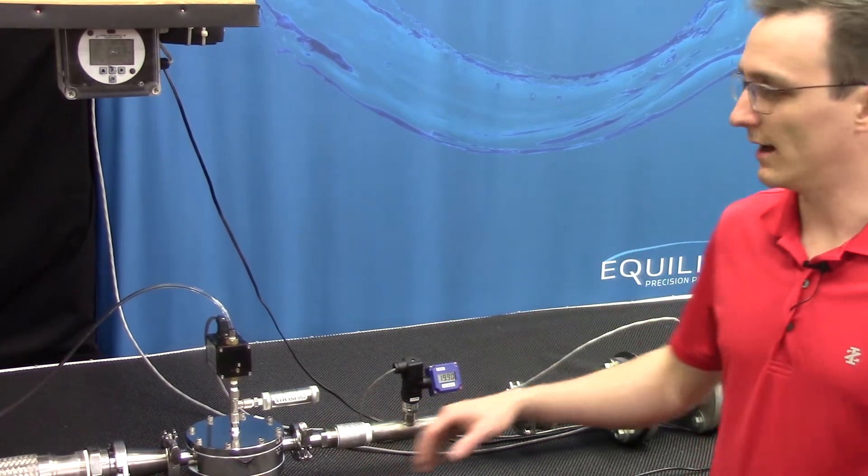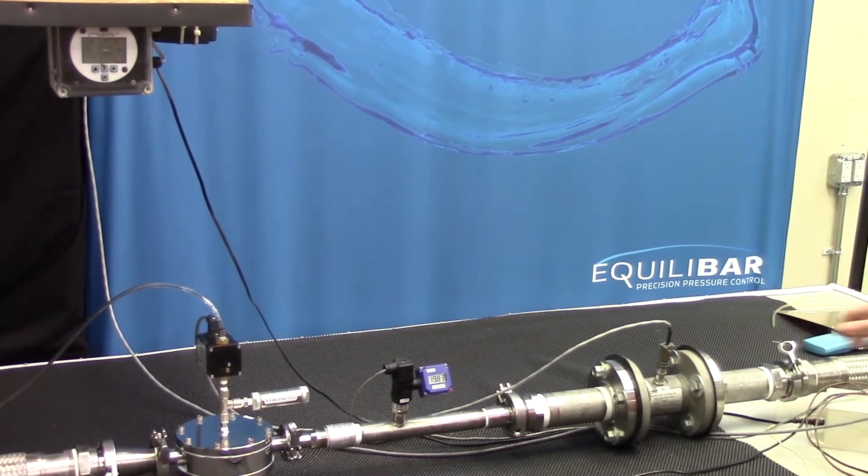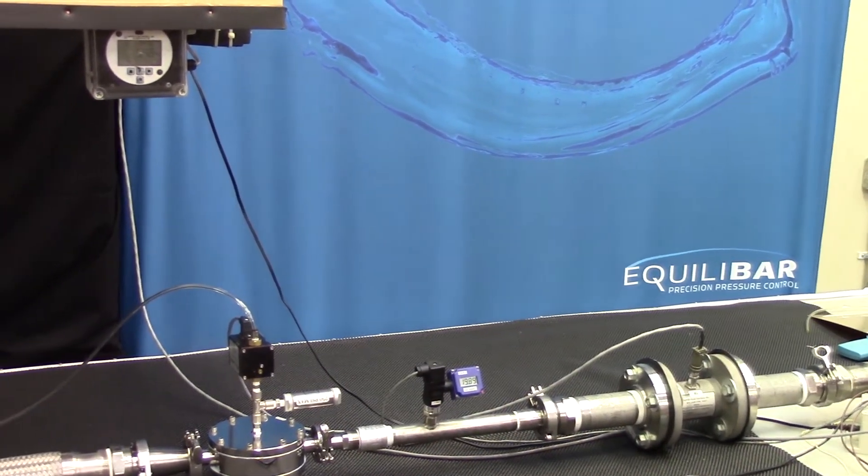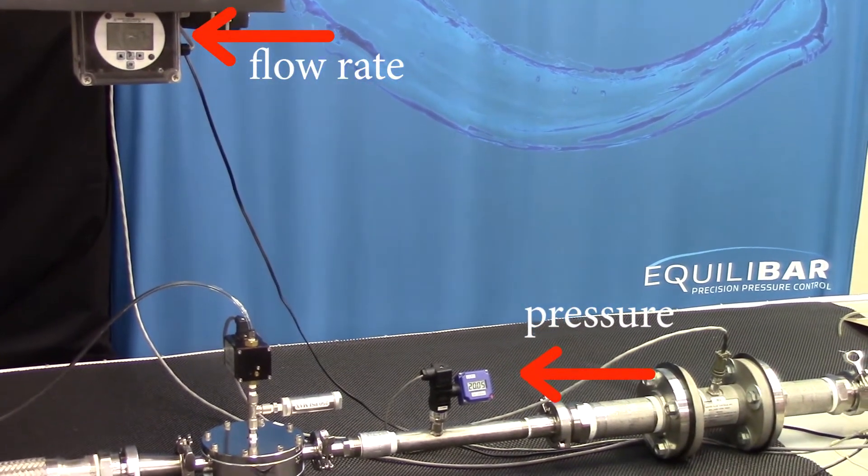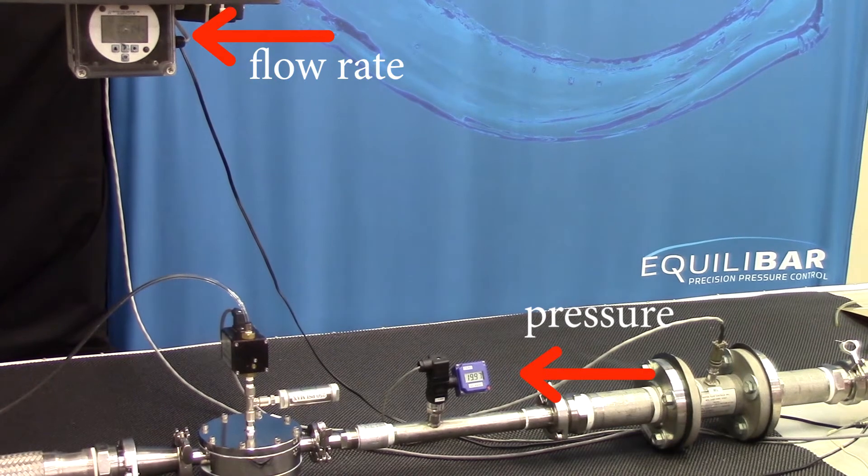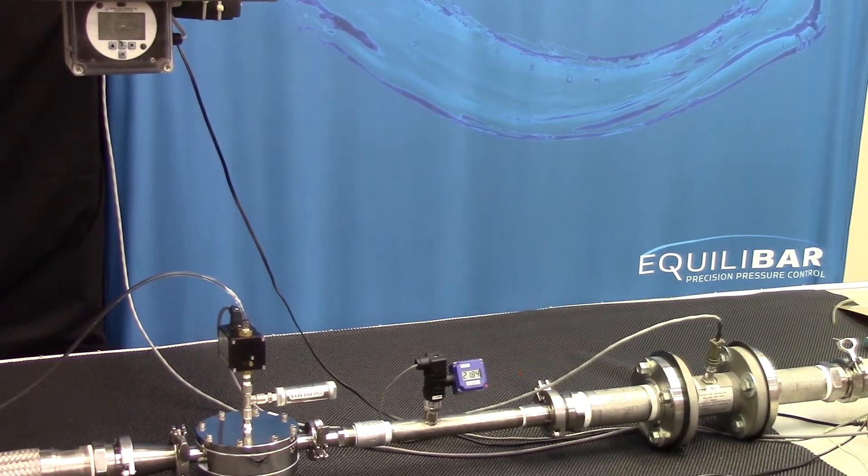All right, so now we're going to begin. We are not plotting this flow in LabView, but we're going to present it on this screen here, and we're going to increase it to 30 gallons per minute, which will saturate the valve we're testing.